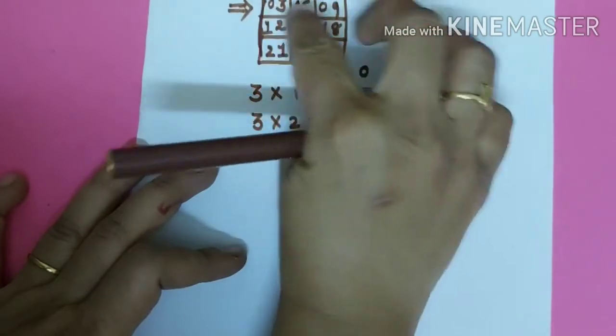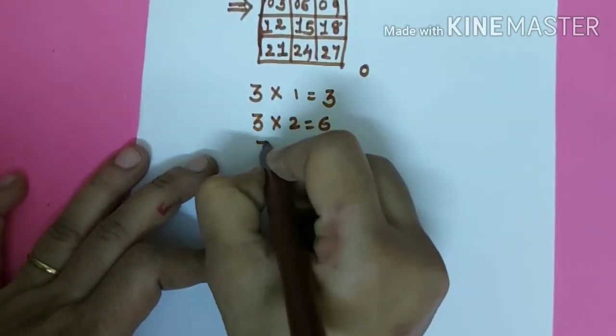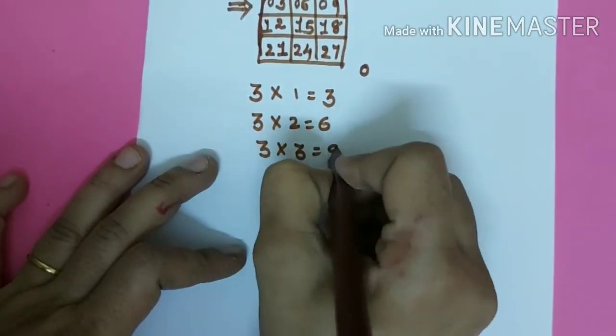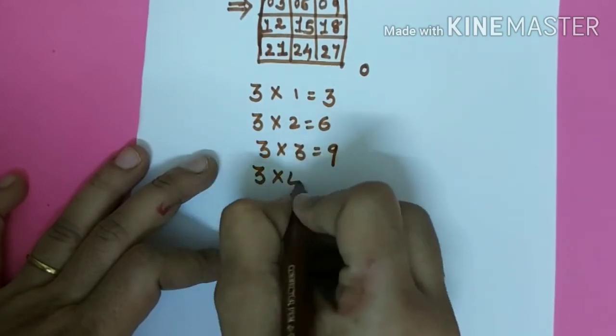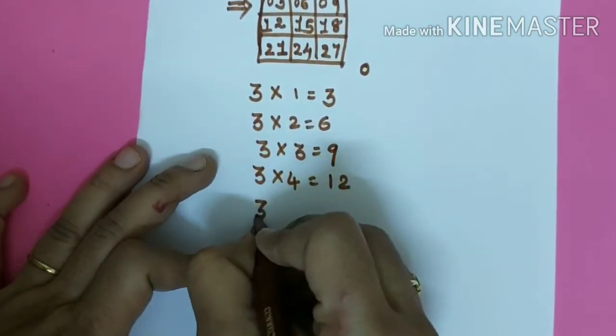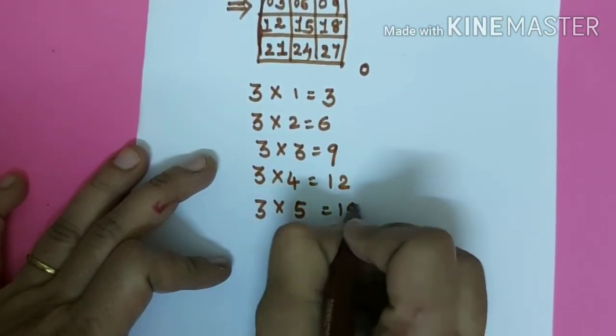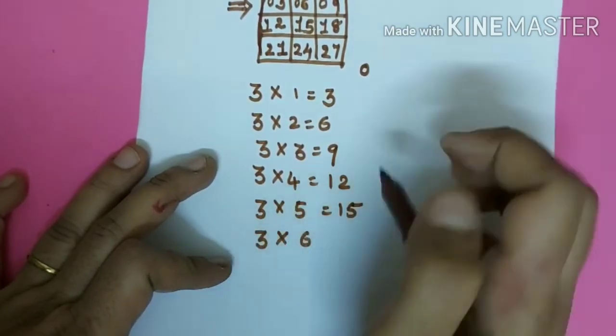Three twos are six. Three threes are nine. Three fours are twelve. Three fives are fifteen. Three sixes are eighteen.